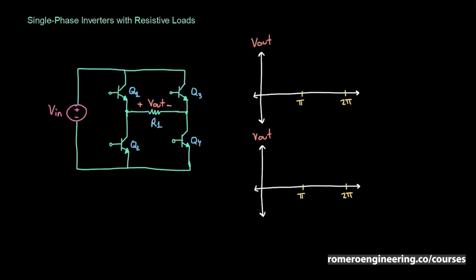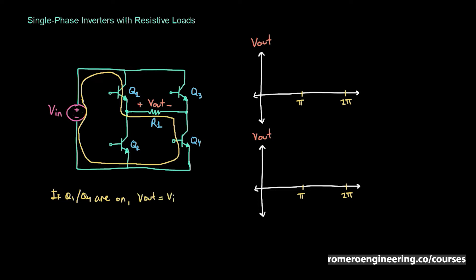If we switch Q1 and Q4 on while leaving Q2 and Q3 off, then VIN is connected through Q1, through the output load, through Q4, and back to the input. We've connected the positive terminal of VIN to the positive terminal of VOUT, and the negative terminal of VIN to the negative terminal of VOUT. So if Q1 and Q4 are ON, then VOUT equals VIN.